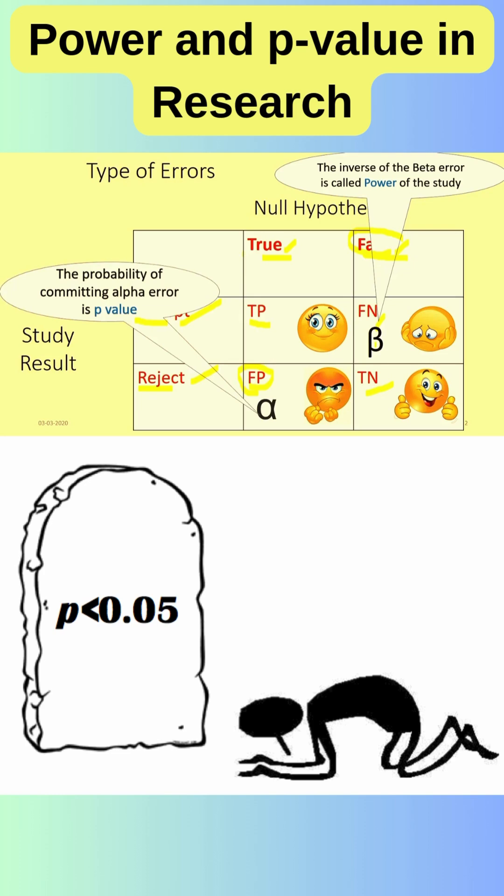As the probability of committing an alpha error is close to zero, or the p-value is close to zero, the chance of you rejecting the null hypothesis when it is actually true is going to be nil. When p-value is less than 0.05, you call it statistically significant.